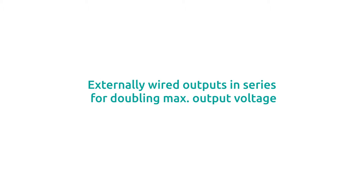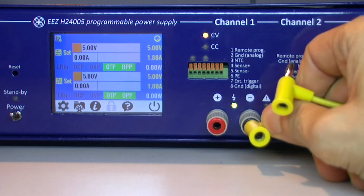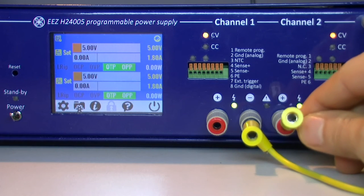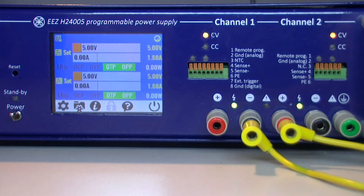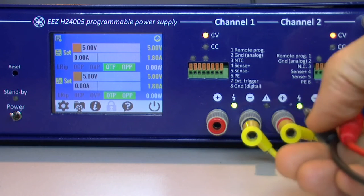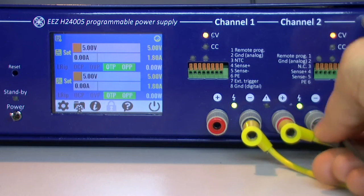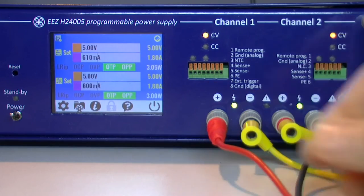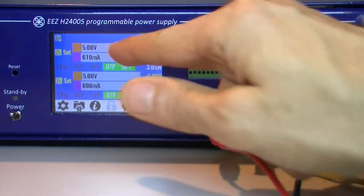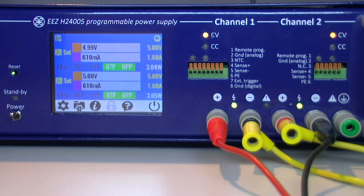Let's start with combining them in series. For that we need one cable in between - channel output one is minus to another plus, and the remaining going to our load. Some current is flowing and both channels are still in constant voltage. So far so good.